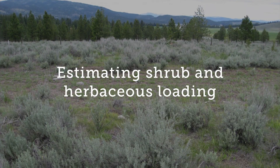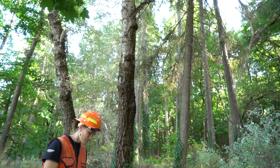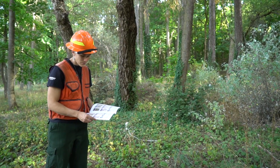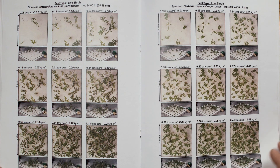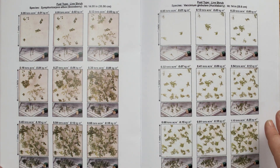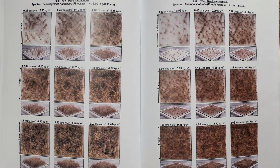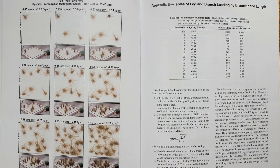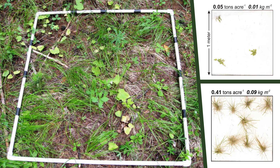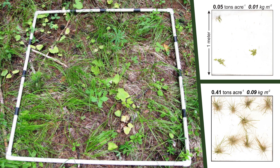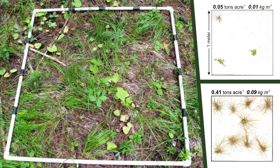The first step in estimating shrub and herbaceous loading is to identify the plant species within the sampling unit. The user must estimate loading by matching the species on site with one or more of the photo load sequences. Since the photo load guide contains only 7 shrub species, 2 grass species, and 2 forb species, you must match the morphology of field species with those in the sequences. If there are several species on your plot, you may use several photo series and sum individual loadings, or rate the collection using the most similar sequence.